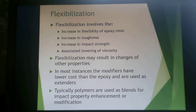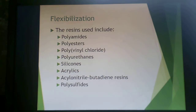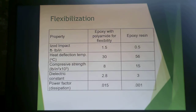Making an epoxy resin more flexible increases toughness and impact strength. Flexibility modifiers typically have a lower cost than the epoxy resin, so they are also used as extenders. Polymers used for flexibilization include polyamides, polyesters, PVC, polyurethanes, silicones, acrylics, acrylonitrile-butadiene resins, and polysulfides. An epoxy blended with a polyamide gives three times higher impact strength than the epoxy alone, though with a lower heat deflection temperature and lower compressive strength.